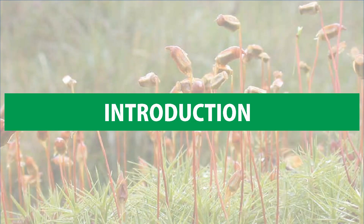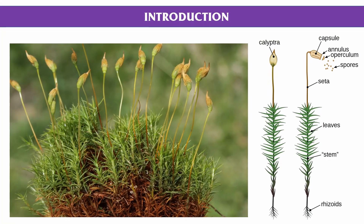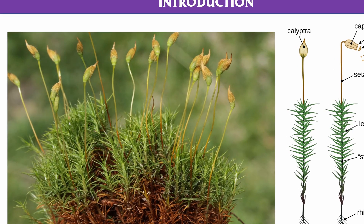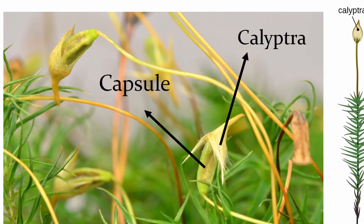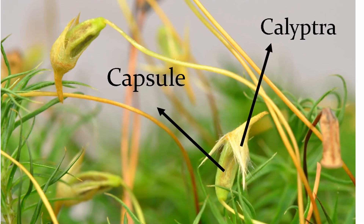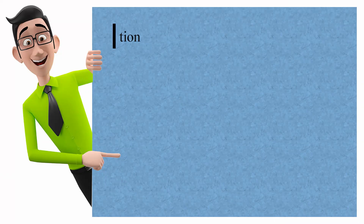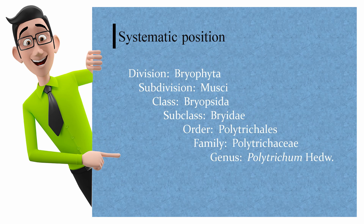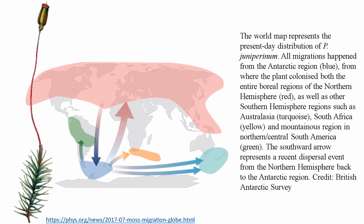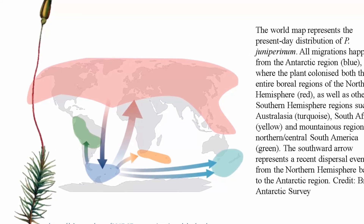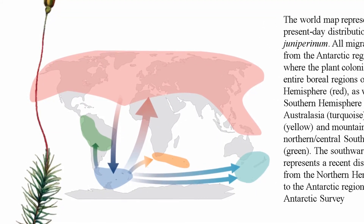First of all, the introduction. Polytrichum is one of the largest mosses, which is commonly called as hairy-capped moss because of the calyptra enclosing the mature capsule. Polytrichum is a member of the family Polytrichaceae, or the Polytrichales, which falls under class Bryopsida. The genus comprises over 100 species found all over the world, which are chiefly confined to the tropical and temperate zones.